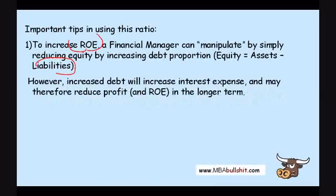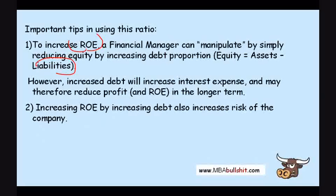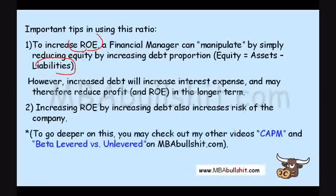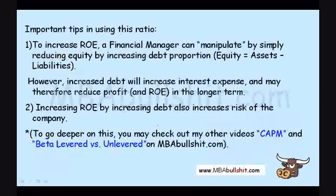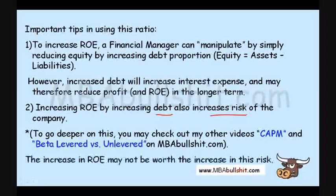The second tip is that increasing ROE by increasing debt also increases the risk of the company, because higher debt means higher risk. If you'd like to go deeper into this concept, look at my videos on CAPM or the Cost of Equity and on levered versus unlevered beta. Simply put, the increase in ROE may not be worth the increase in risk.